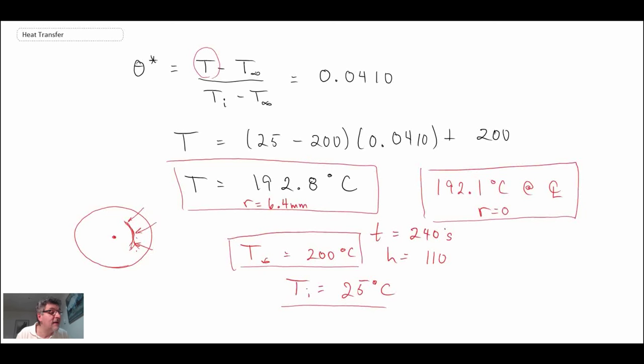So that is an example using the approximate solution. In the next one, we're going to use the Heisler charts to solve the exact same problem.